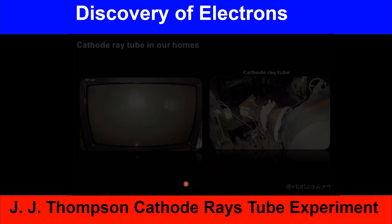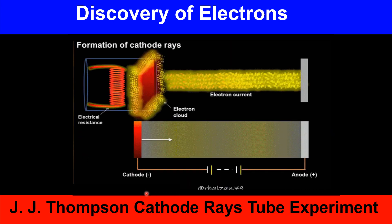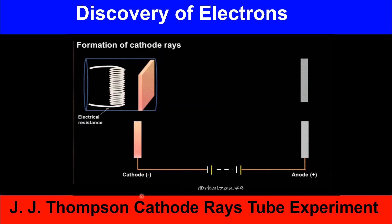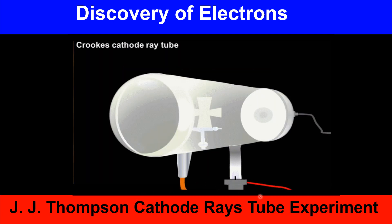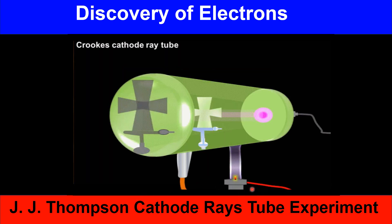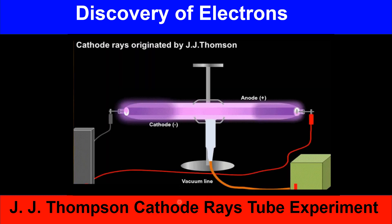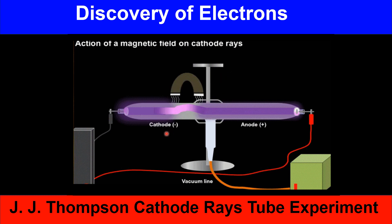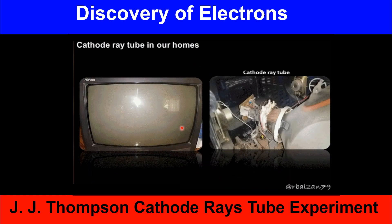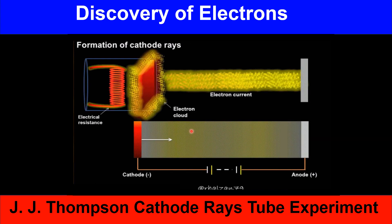However, in 1897 JJ Thomson concluded that there are some other particles present inside the atom. These particles are known as electrons — negatively charged particles. JJ Thomson performed the cathode ray tube experiment in which he produced cathode rays inside a cathode tube, investigated their nature, and concluded that cathode rays are made up of negatively charged particles known as electrons.